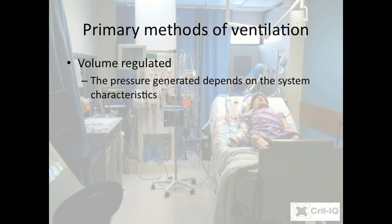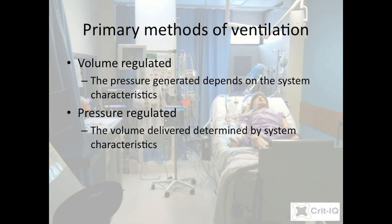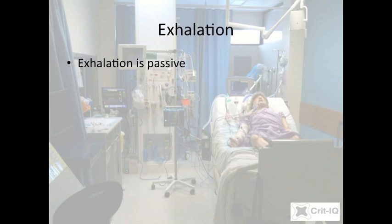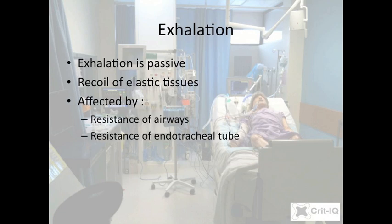In the second approach, the ventilator applies a pressure to the system, and the volume pushed in is entirely dependent on the same characteristics of the system. This is known as pressure-regulated ventilation, sometimes referred to as time-cycled, as expiration ends after a specific time. In either circumstance, exhalation is passive and relies on the elastance properties of the lung and chest wall, the resistance of the airways and the endotracheal tube, and some specific settings in the ventilator.